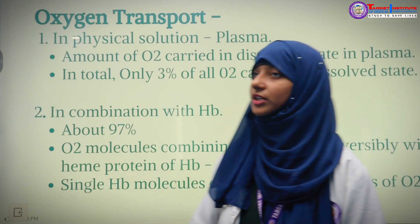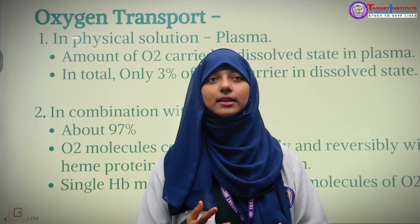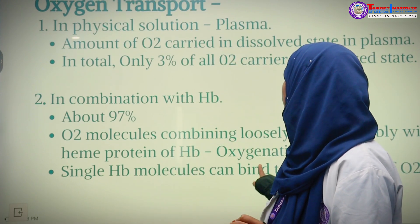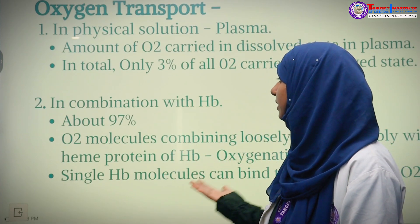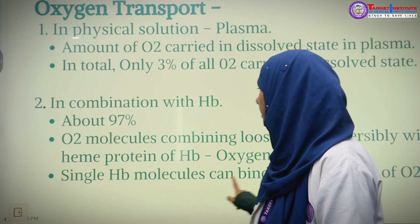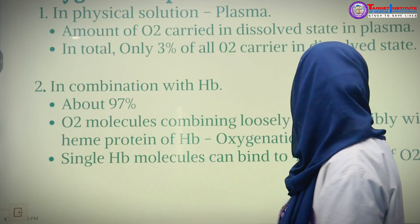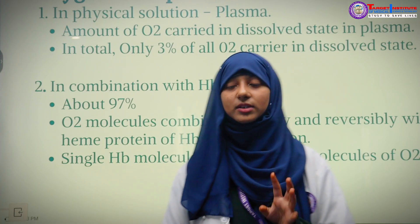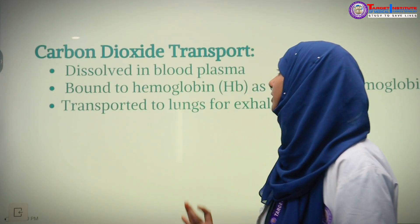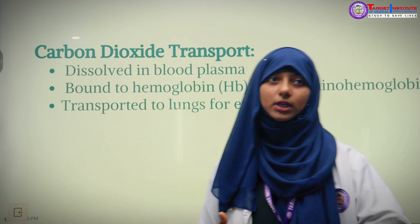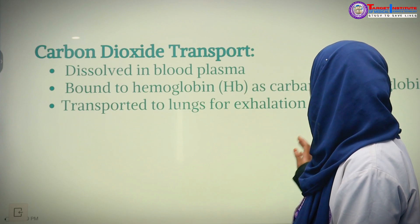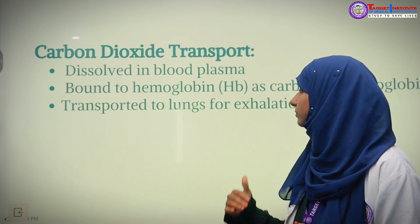For oxygen transport: 3% of O2 is carried in dissolved state in blood plasma, and 97% is carried in combination with hemoglobin — O2 molecules combine loosely and reversibly with the heme protein of hemoglobin, which is called oxygenation. A single hemoglobin molecule can bind up to four oxygen molecules. For carbon dioxide transport, CO2 is dissolved in blood plasma and also bonded with hemoglobin, forming carbaminohemoglobin, and then transported to the lungs where it is exhaled out.